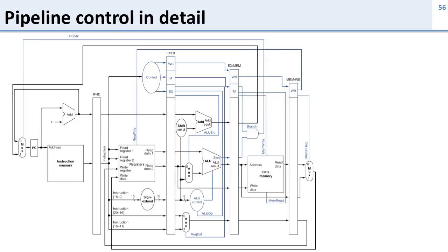Let's take a look at the pipeline control in detail. Here's a picture from the book which includes the control signals as well as the pipeline registers. In the first pipeline stage we load the instruction and put it in the pipeline register. In the second stage, decode, we decode that through the control logic into individual bits for each stage. The bits for the execute stage go into the pipeline register and we use them in the execute stage to control what goes on.